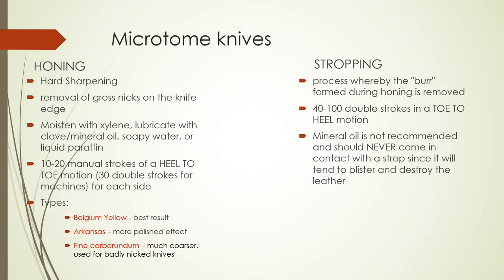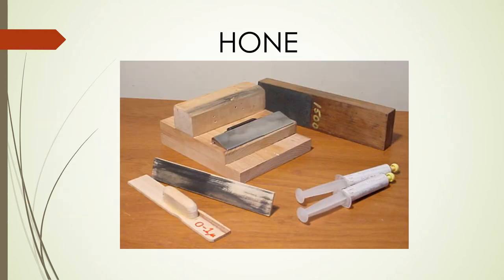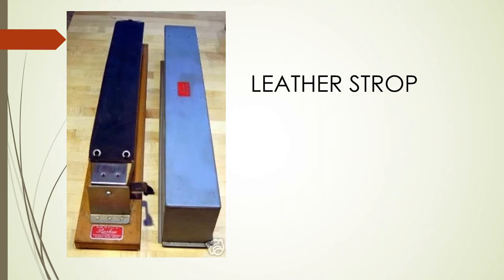After honing the knife, we proceed to stropping — a process whereby the burr formed during honing is removed. We do 40 to 100 double strokes in a toe-to-heel motion, which is the opposite direction. Mineral oil is not recommended and should never come in contact with the strop, since it will blister and destroy the leather. Here we have a picture of a hone, made of a rocky material, and here we have a leather strop, which is much more fine.